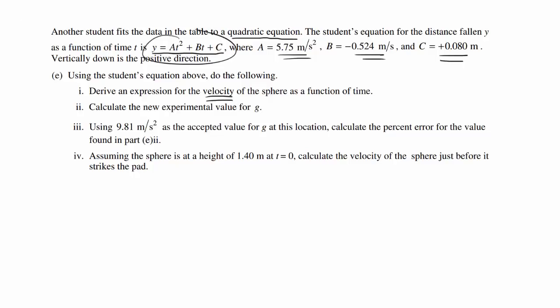We're given the position function, so velocity is simply differentiating this with respect to time, which is 2At plus B. This equals 2 times 5.75 meters per second squared times t, plus B which is negative 0.524 meters per second. So velocity = 11.5 meters per second squared times t minus 0.524 meters per second.